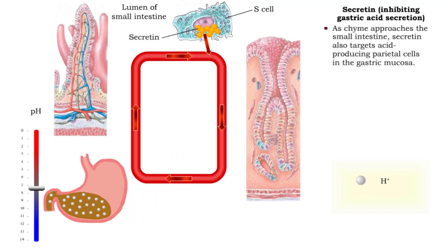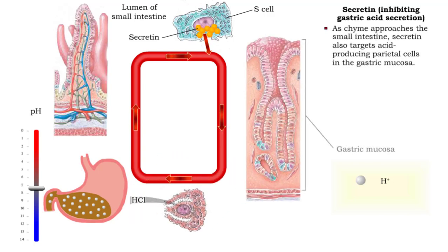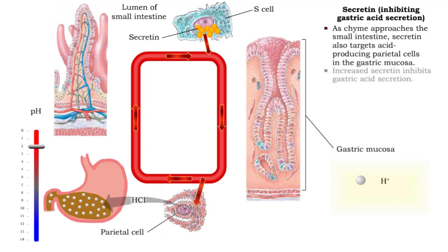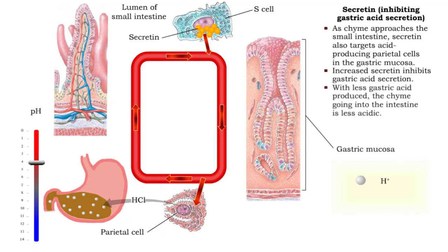Secretin also targets the acid-producing parietal cells of the gastric mucosa. An increase in secretin will inhibit the secretion of gastric acid. The less acid produced, the lower the acidity of the chyme moving into the duodenum.